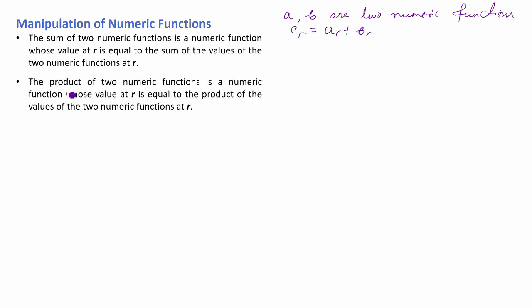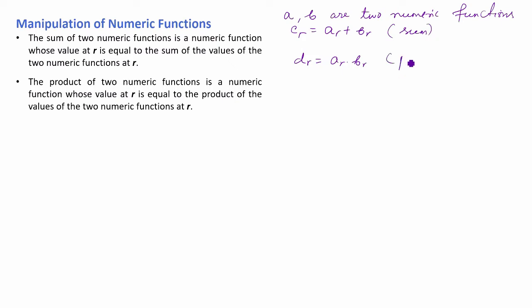Similarly, the product of two numeric functions is a numeric function whose value at r is equal to the product of the values of the two numeric functions at r. Let's suppose d(r) is a numeric function which is the product of numeric functions a and b. So it can be written as a(r) into b(r). So this is the sum and this one is the product.